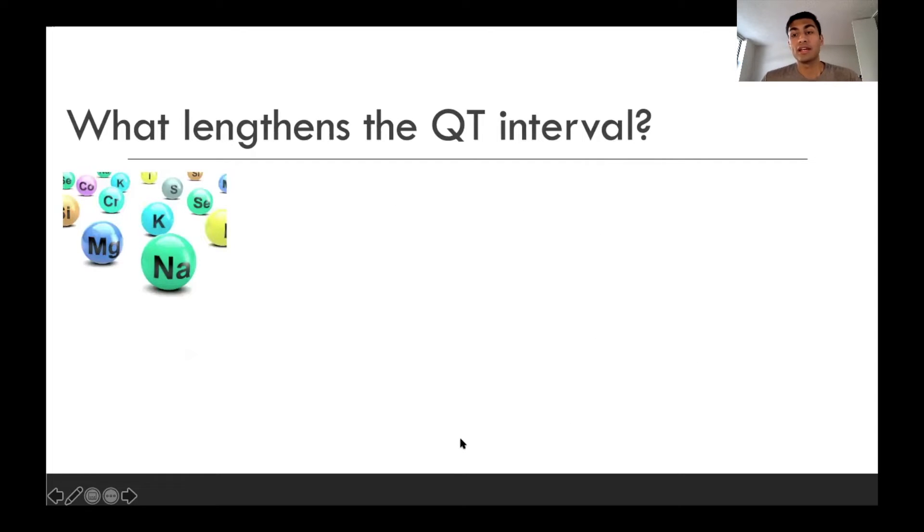Okay, so what are some of the factors that can lengthen the QT interval? So the first one is electrolyte abnormalities. And in particular, hypocalcemia, hypokalemia, and hypomagnesemia. So if we have decreased calcium, potassium, or magnesium, those can lead to lengthening the QT interval.